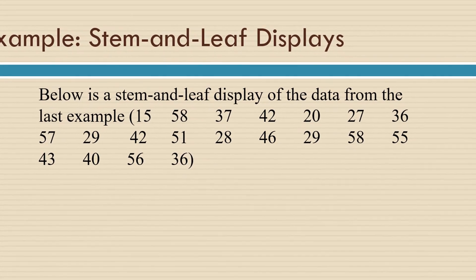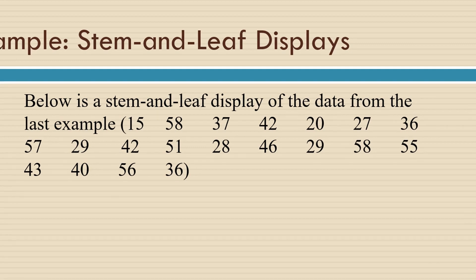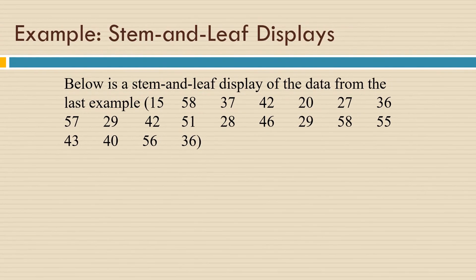As an example of a stem and leaf display, we're going to use this data, and we're going to categorize it according to the tens place digits. You can see that the lowest value in the data set appears to be 15, and the highest value is somewhere in the 50s.